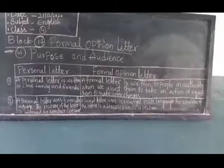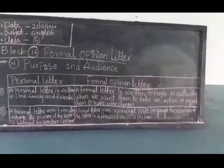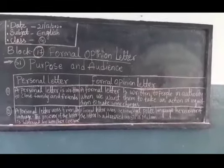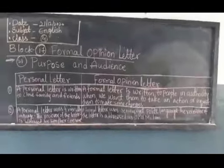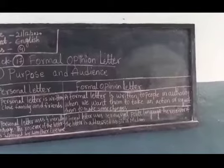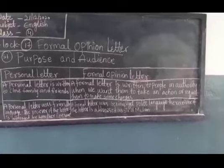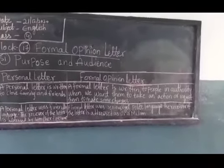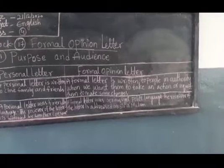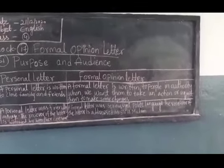Formal opinion letter: a formal letter is written to people in authority when we want them to take an action or request them to make some changes. Authority means who is in a good position. For example, take a school example — if you want leave for 20 days, what will you do? You will go near the principal. The principal has authority to give you leave for 20 days.